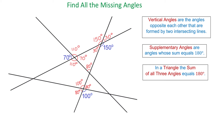And now, if this angle is 80 degrees, then this one is also 80 degrees because they are vertical angles. And if this angle is 80 degrees, then this one will be 100 degrees because they are supplementary angles. Then the angle opposite of this one will also be 100 degrees.